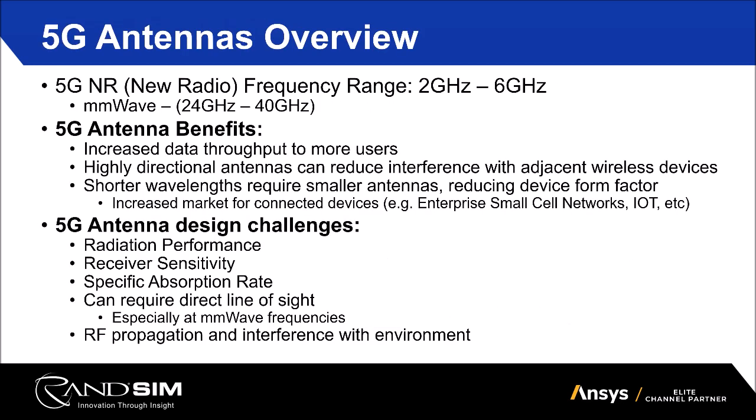Going into our 5G antennas overview — 5G is a broad term with a number of different frequency ranges. We have 5G NR, or New Radio, falling within the two to six gigahertz bandwidth range. Traditionally, LTE or GSM operates around 500 megahertz up to around two gigahertz. 5G NR falls in a higher space, similar to Bluetooth and home Wi-Fi. There's also a much higher frequency set in millimeter waves — 24 to 40 gigahertz — where you see a lot of beam steering, very high data throughputs, very short distances, but lightning-fast speeds.